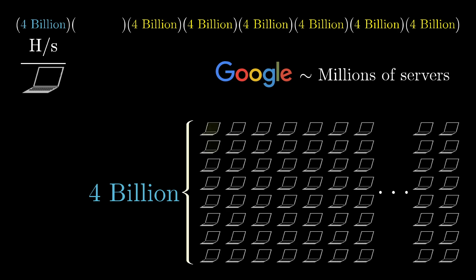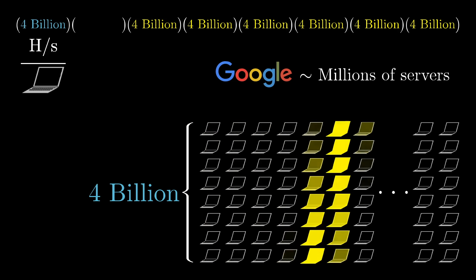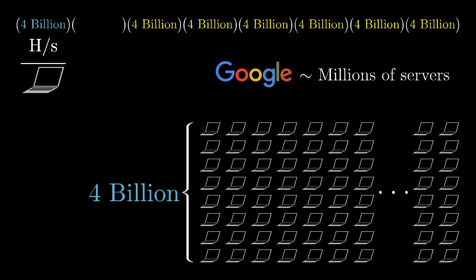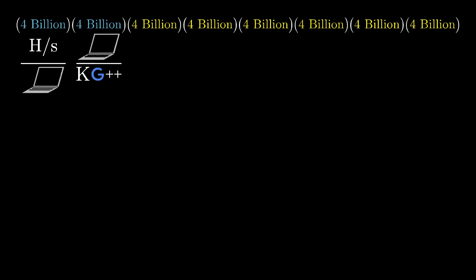In reality, most of those servers are going to be much less powerful than our imagined GPU-packed machine. But let's say that Google replaced all of its millions of servers with a machine like this, then 4 billion machines would mean about a thousand copies of this souped-up Google. Let's call that one kilogougle worth of computing power.